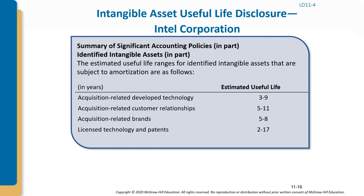Here is a chart showing the useful life of different intangible assets. For example: acquisition-related developed technology is three to nine years; customer relationships five to eleven years; brand-related items five to eight years; and technology and patents two to seventeen years.